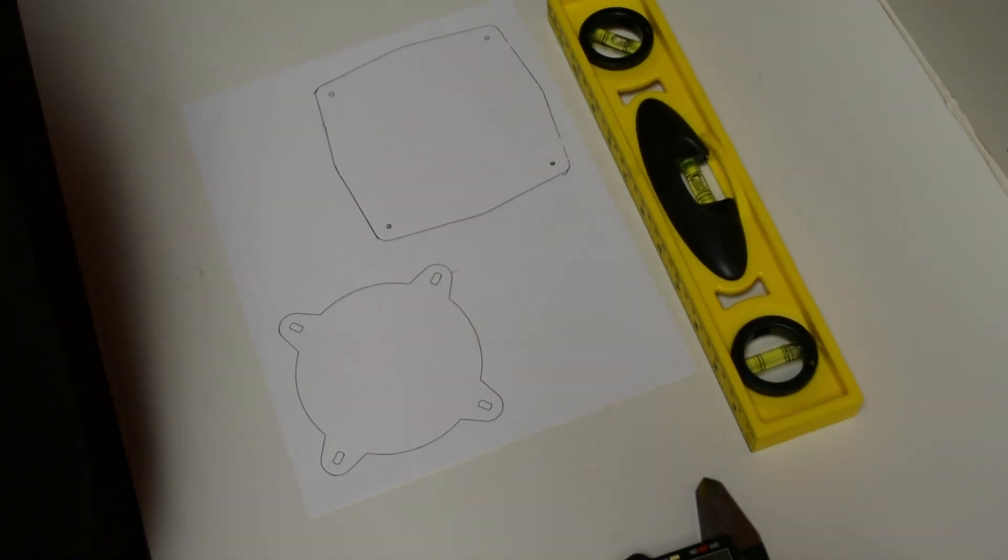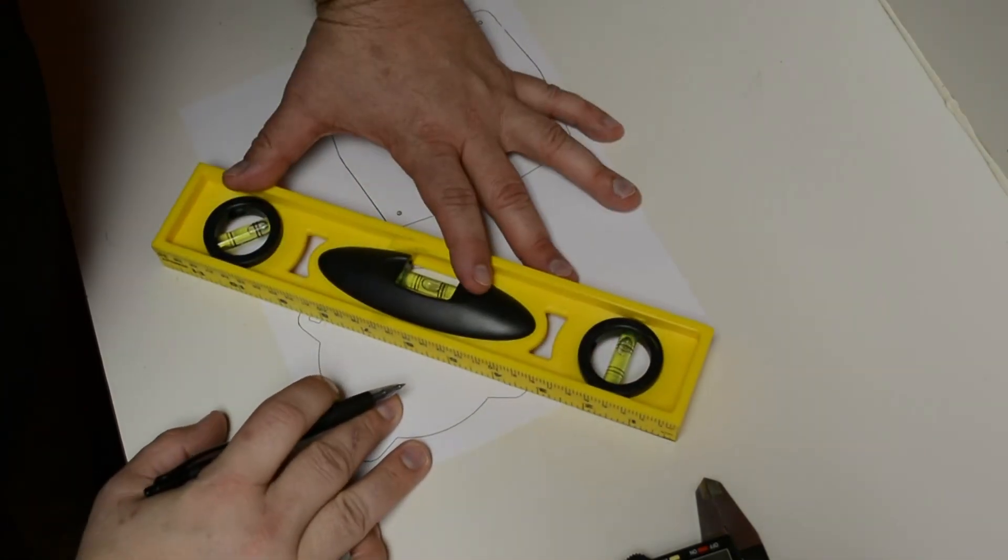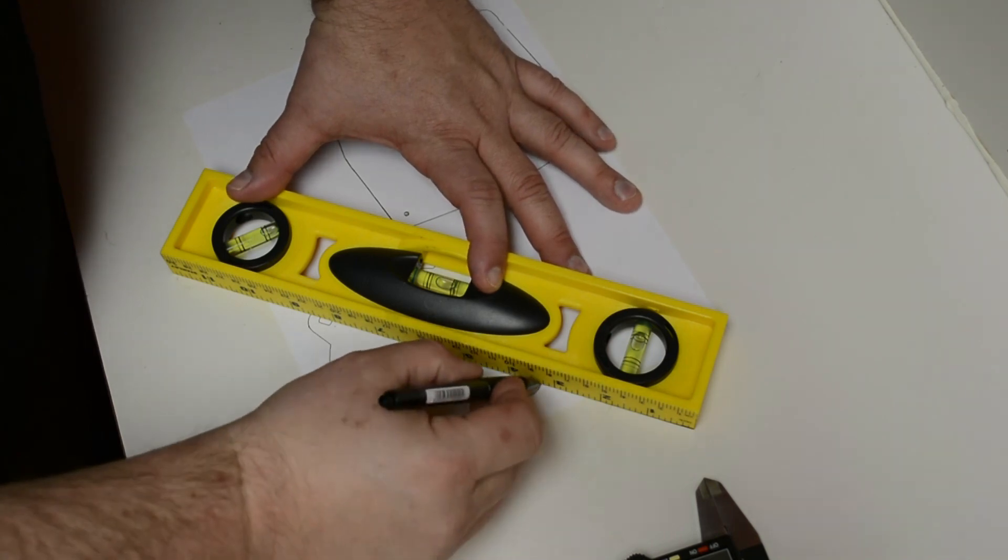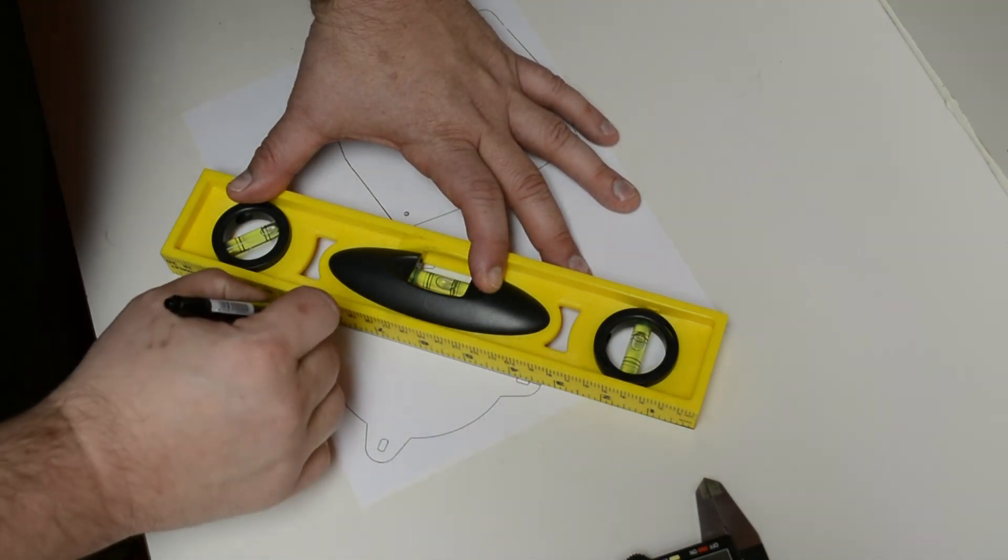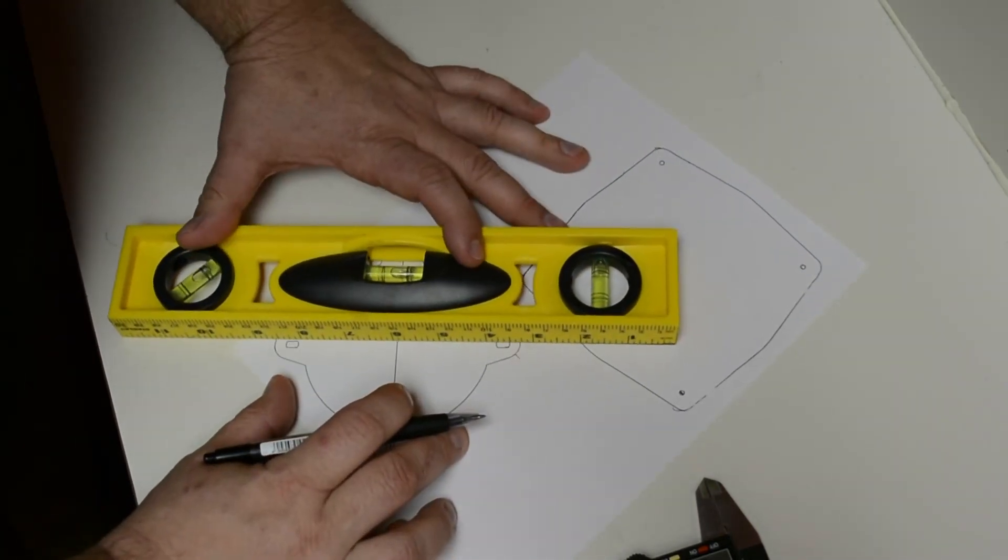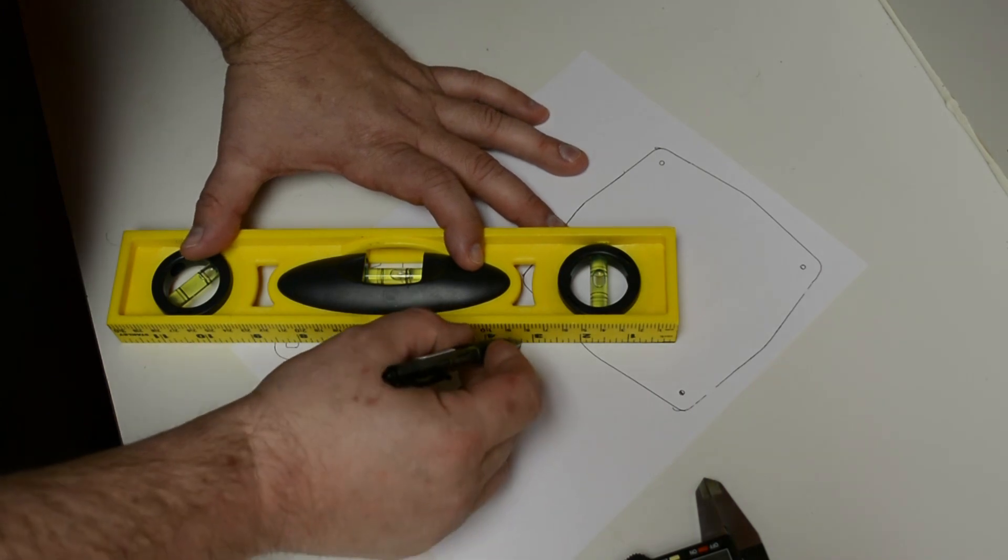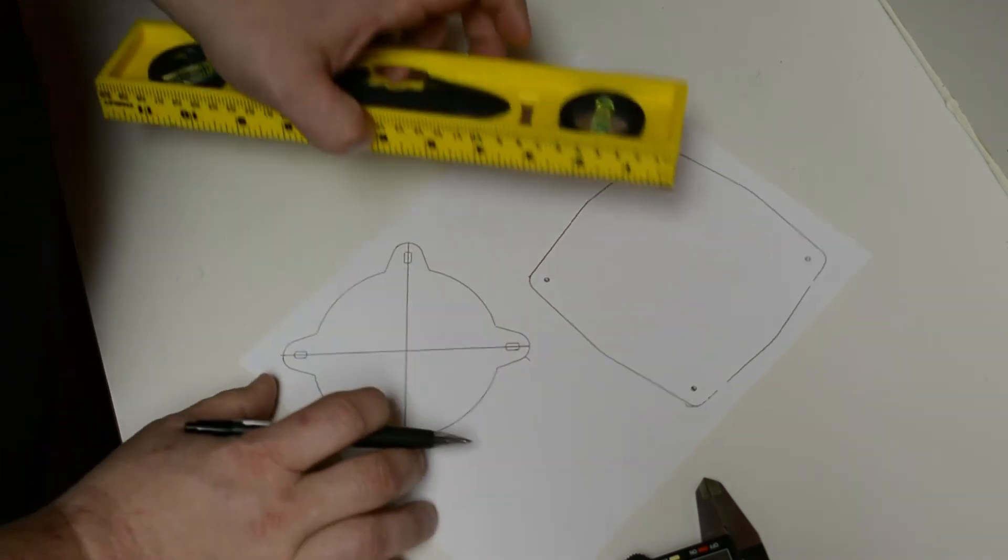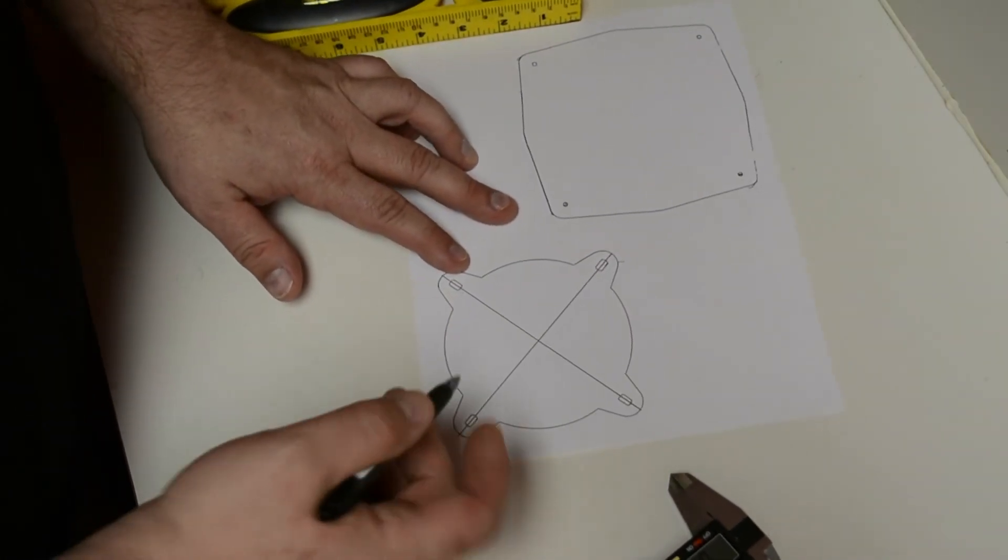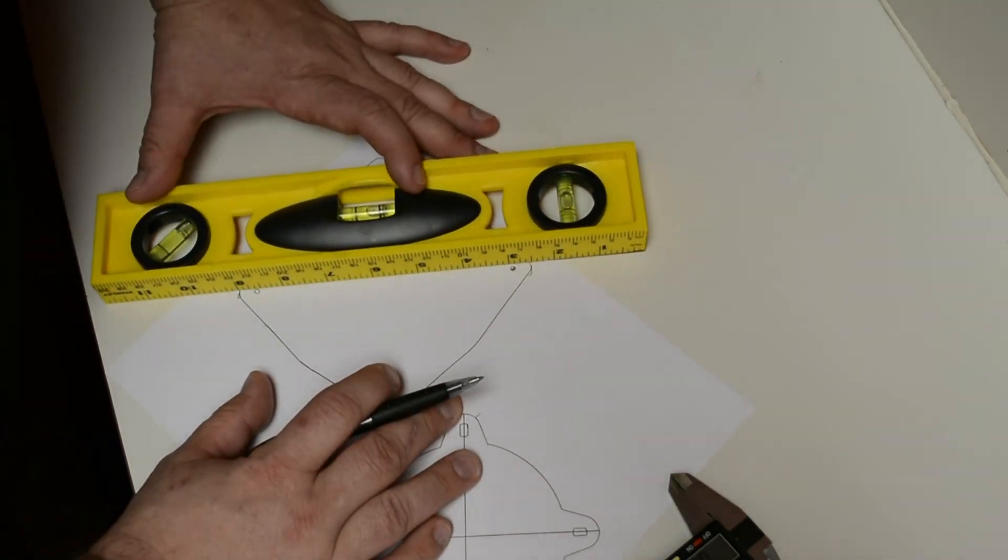What we need to do next is we need to find the center point for each speaker. So we're going to take our straight edge and we're going to align it in the center of each of the holes, mounting hole openings, and we're going to draw a line. We're going to do the same thing on this side. Now you don't have to be super perfect. It's not really rocket science here, but we do want to try to find the rough center point.